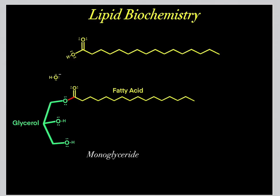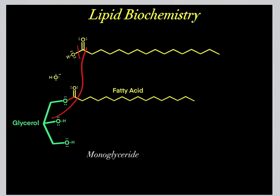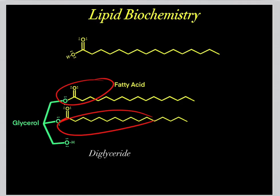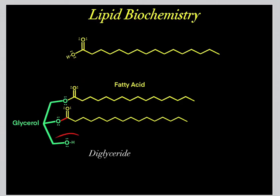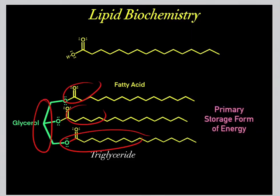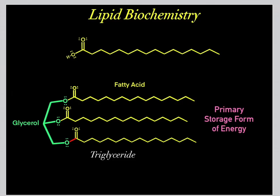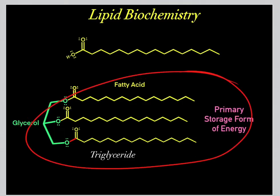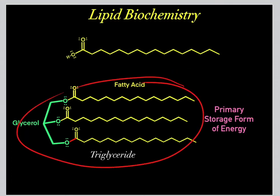We don't stop there — we can also take the second hydroxyl and add a second free fatty acid through mechanism one, forming this diglyceride. We also have a third hydroxyl, so we can add a third free fatty acid through that same mechanism one, forming this triglyceride. This compound — the triglyceride, also sometimes called triacylglycerol — is the primary storage form of energy our bodies use. When our body wants to store excess energy, we store it in the form of this triglyceride.